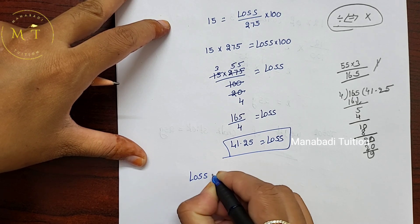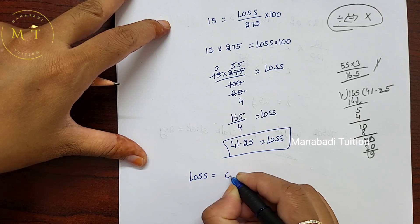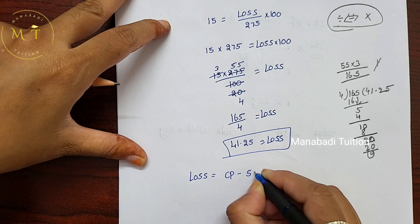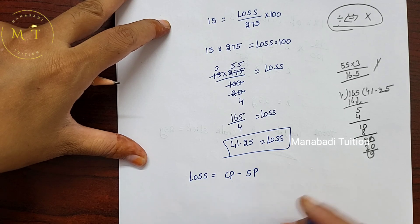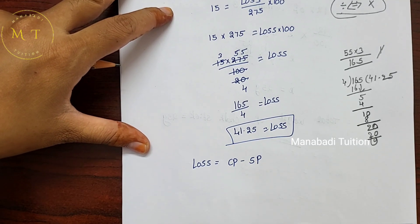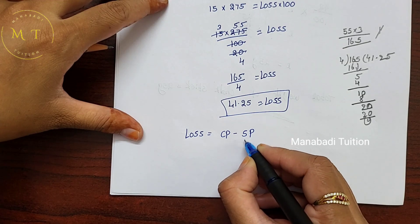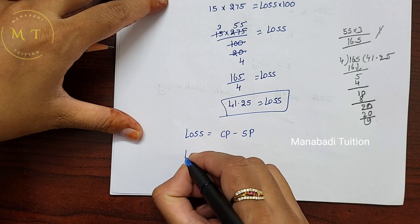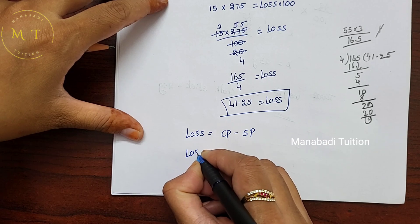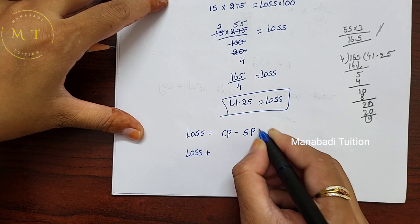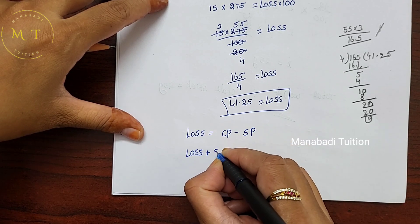Loss is equal to cost price minus selling price. We will transpose to find the selling price.